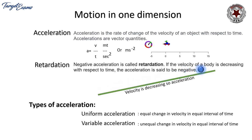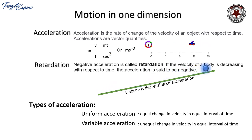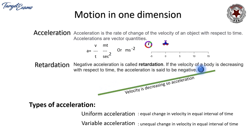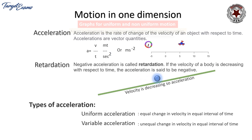Types of acceleration: uniform acceleration is when there is equal change in velocity in equal intervals of time. Variable acceleration is when there is unequal change in velocity in unequal intervals of time, or unequal change in velocity in equal intervals of time.